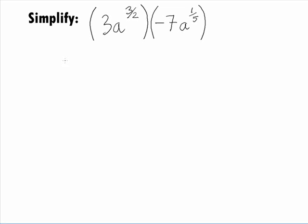In this example, we want to simplify 3a raised to the 3 over 2 power times negative 7a raised to the 1 over 5 power.